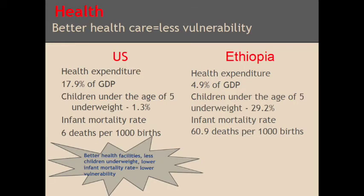The U.S. spends 17.9 percent of their total GDP on health facilities. In contrast, Ethiopia has much lower health expenditure at 4.9 percent of their total GDP. By comparing health between the U.S. and Ethiopia, the U.S. is once again less vulnerable because they have better health facilities, which can provide quicker and better medical treatment, resulting in fewer casualties during the drought.